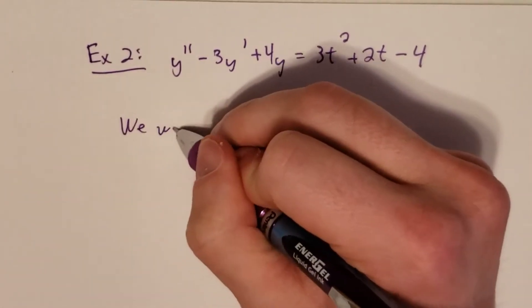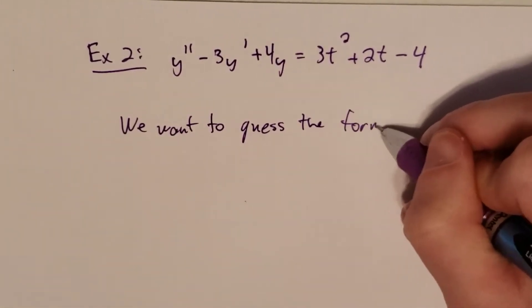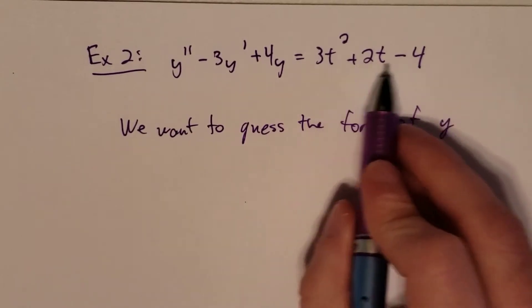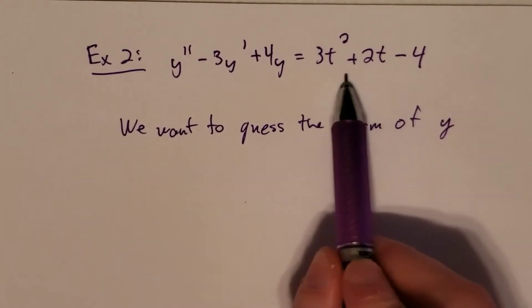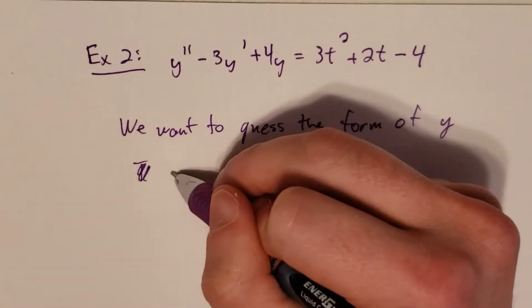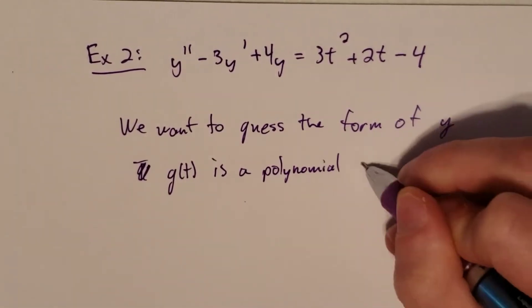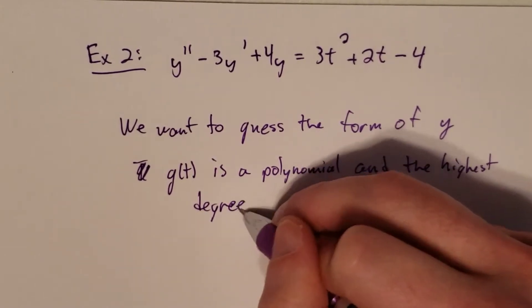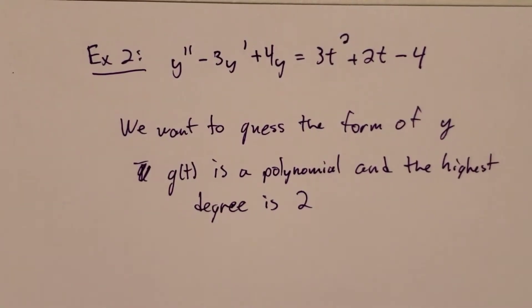Again, we want to guess the form of y. Notice that g of t has a t squared in it, plus 2t minus 4. This g of t is a polynomial, and the degree of that polynomial is 2, so the highest power is 2.